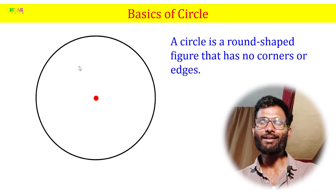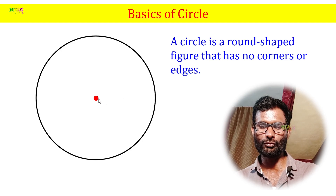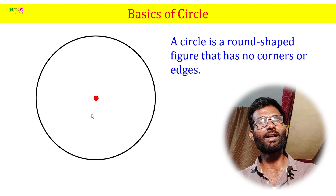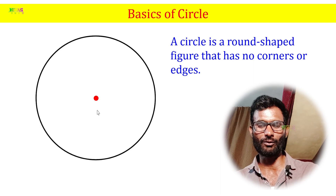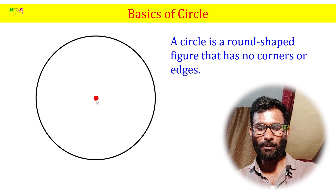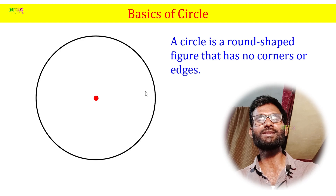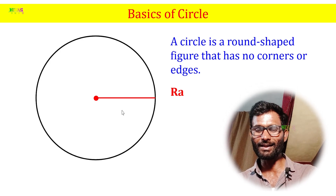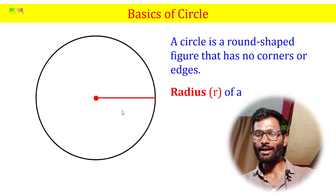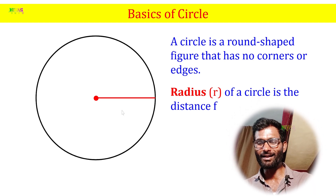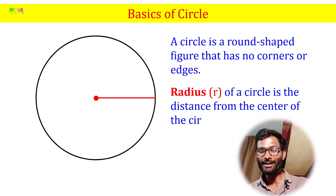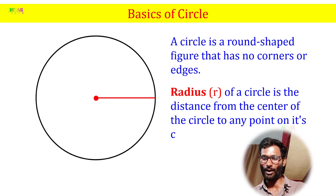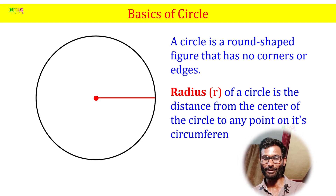If you look at the corners and edges, there is a point, a distance, and a circumference. This is a circle. The point and circumference have a distance, and this distance is the radius. The radius of a circle is the distance from the center of the circle to any point on its circumference.